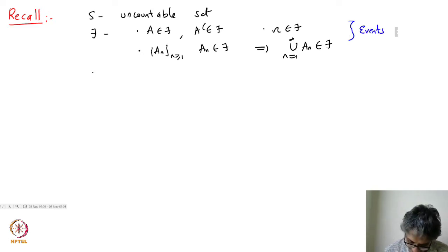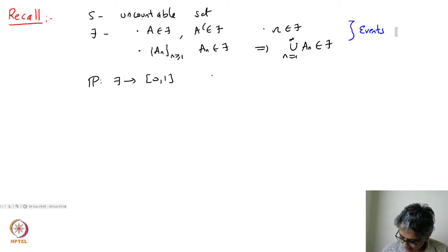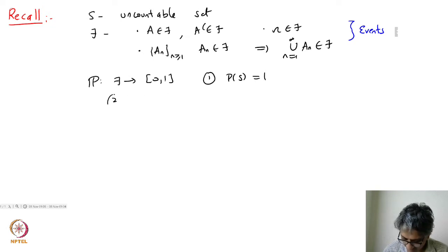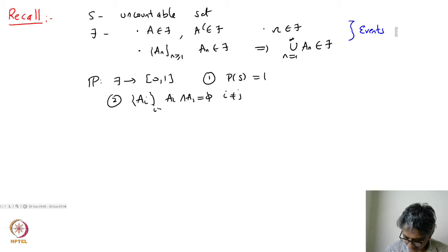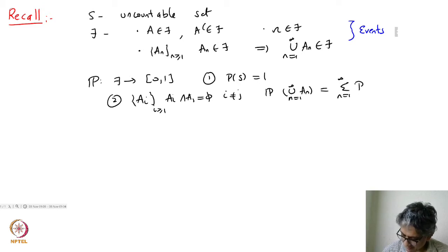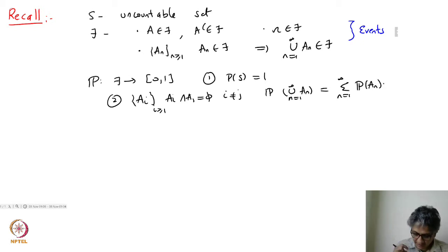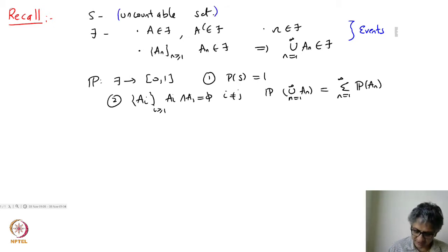And then the probability was defined as a function from F to [0,1], satisfying the two axioms: the probability of S is equal to 1, and if you had a disjoint sequence of events A_i where A_i ∩ A_j equals empty set for i not equal to j, then the probability of the countable union was the sum of the probabilities. This is the generic definition of what a probability should be.